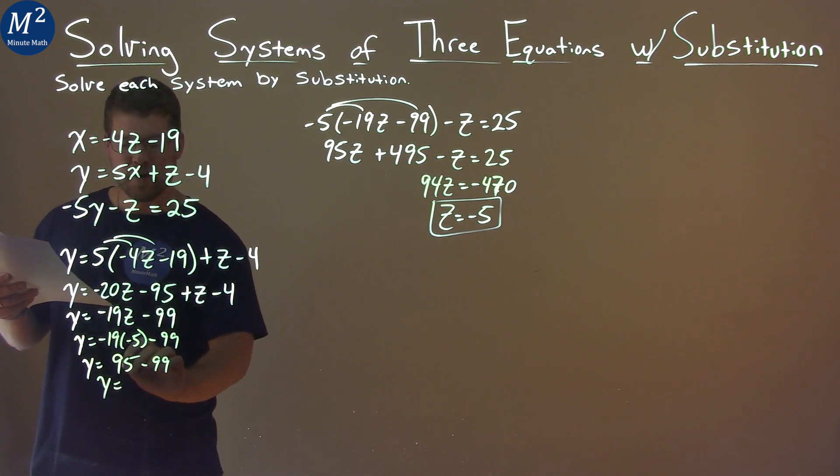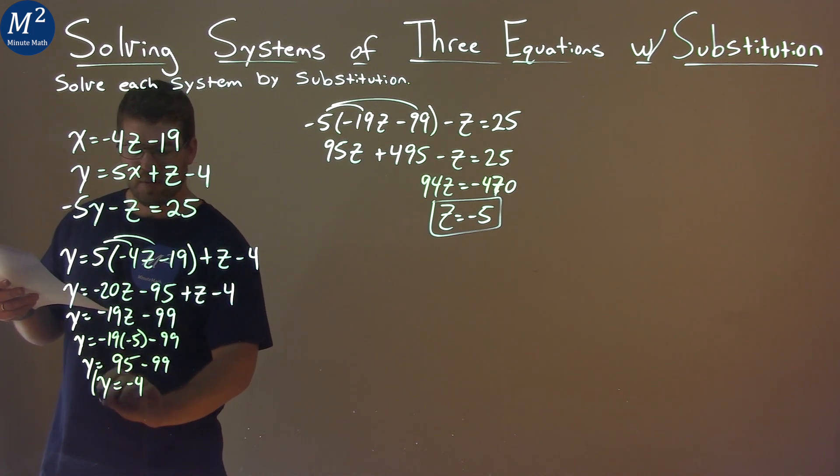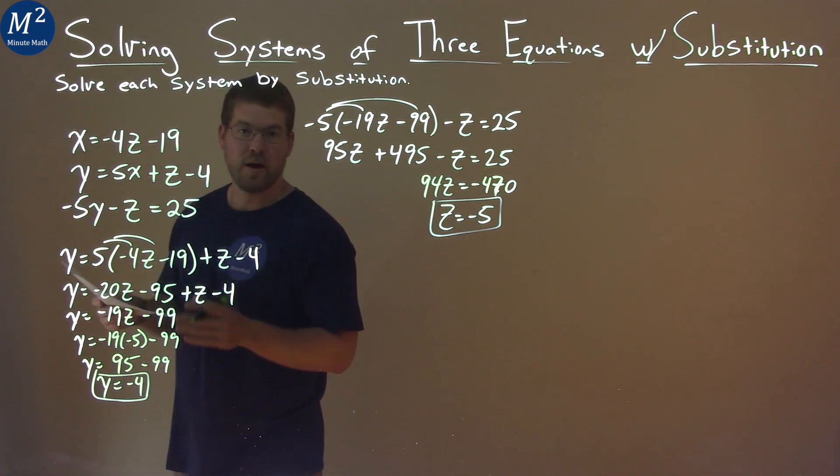So here we have 95 minus 99 is negative 4. And we have our y value. y equals negative 4.